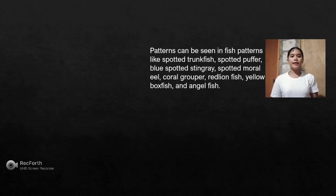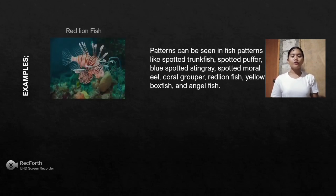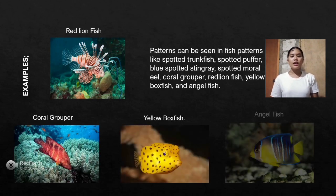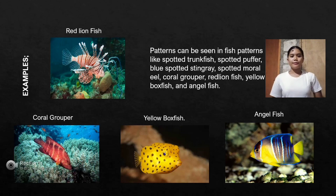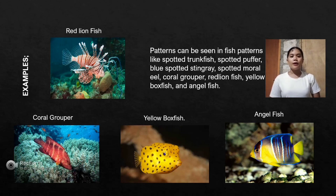Patterns can be seen in fish such as the spotted dragonfish, spotted puffer, blue-spotted stingray, spotted moray eel, coral grouper, red lionfish, yellow boxfish, and angelfish. These animals' stripes and spots attest to mathematical regularities in biological growth and form. Evolutionary and functional arguments explain why these animals need their patterns, but do not explain how the patterns are formed.